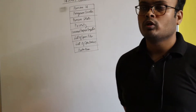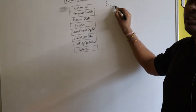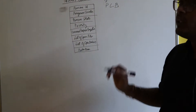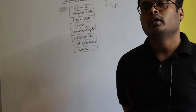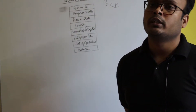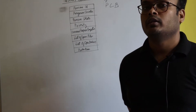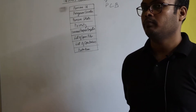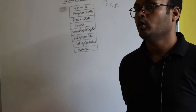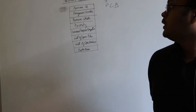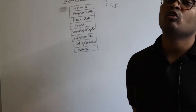Now I will teach you about Process Control Block, also known as PCB. In a RAM, several processes reside at a time. In order to identify all these processes, each process has its own Process Control Block. For example, if four processes are there, then each of these four processes has four control blocks.